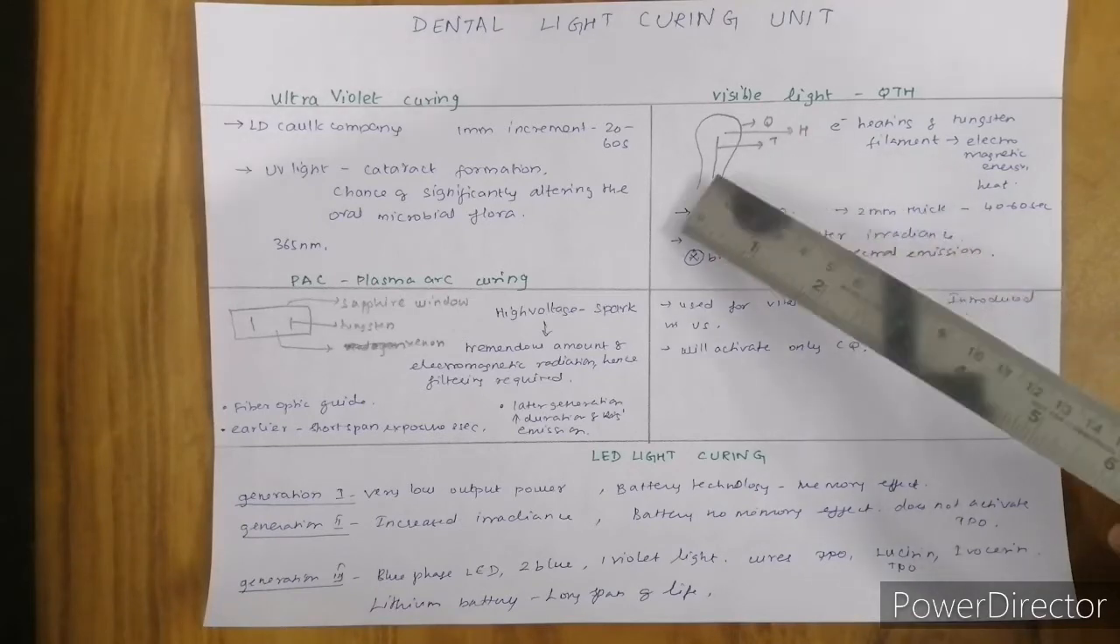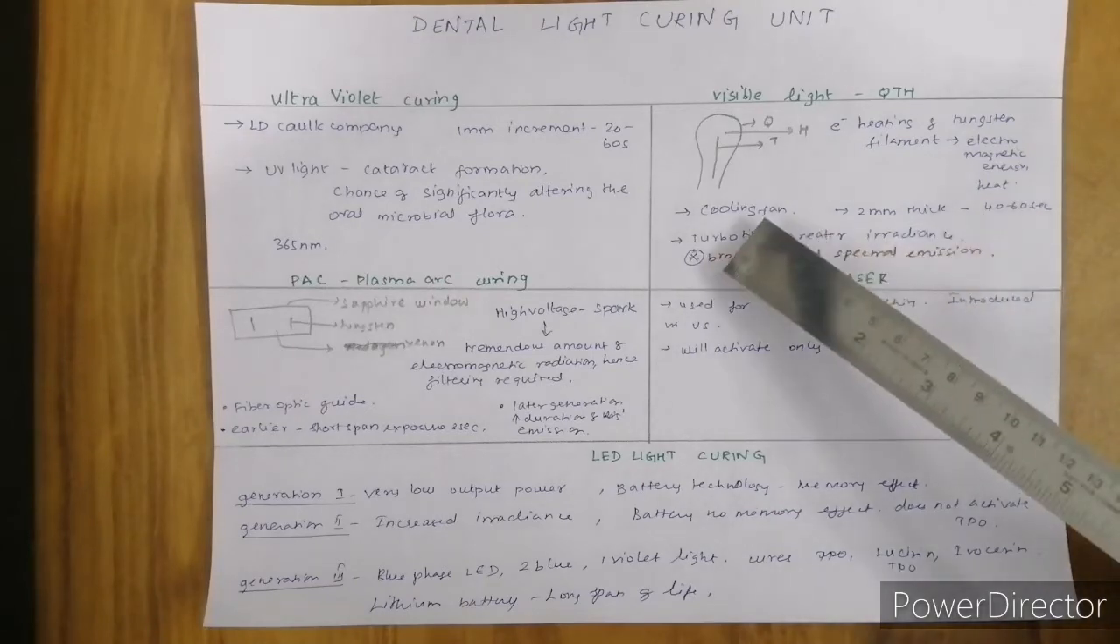We heat the filament, which produces electromagnetic radiation. Heat is also formed because of the resistance developed in the filament, so we require a cooling fan to reduce the heat.